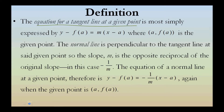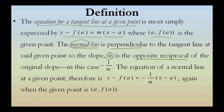The definition. The equation for a tangent line at a given point is most simply expressed by y minus f of a equals m times the quantity x minus a, where a comma f of a is the given point. The normal line is perpendicular — in this case, normal means perpendicular — to the tangent line at said given point.